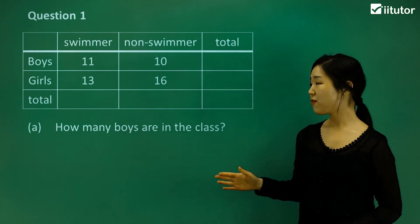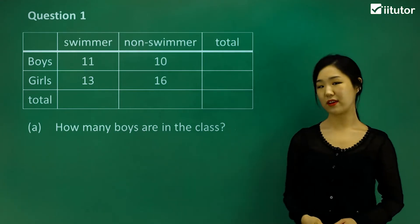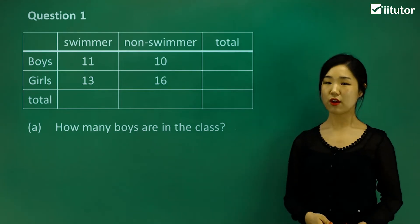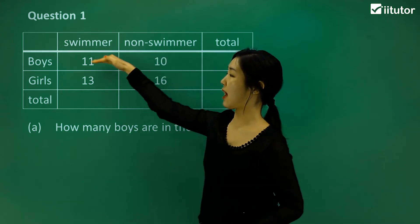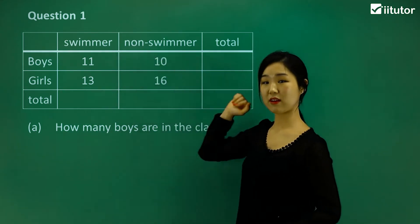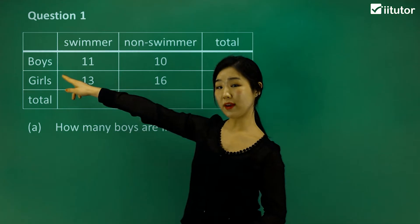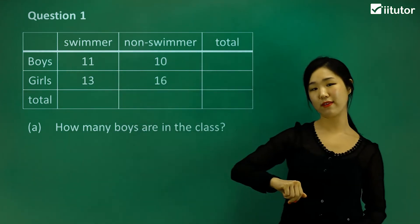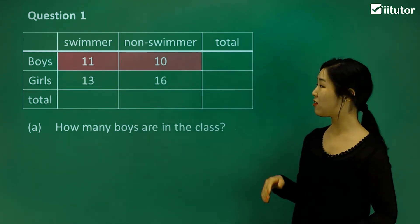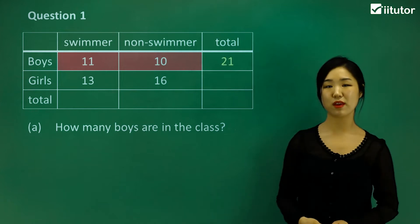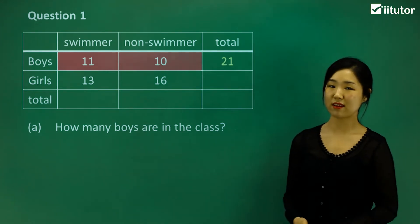Question 8a asks: how many boys are there in the class? We look at the boys row horizontally. There are 11 swimmer boys and 10 non-swimmer boys. Adding those together — 11 plus 10 — simply gives us 21. So there are 21 boys in this class.